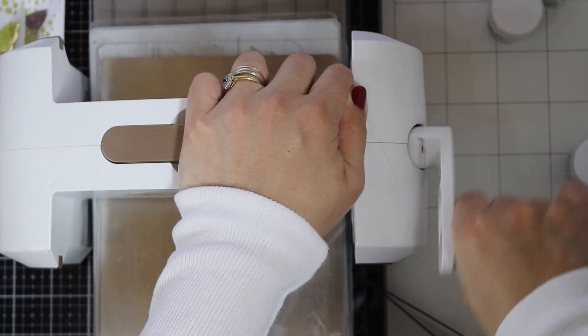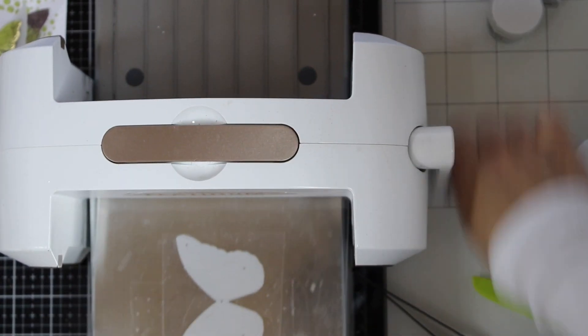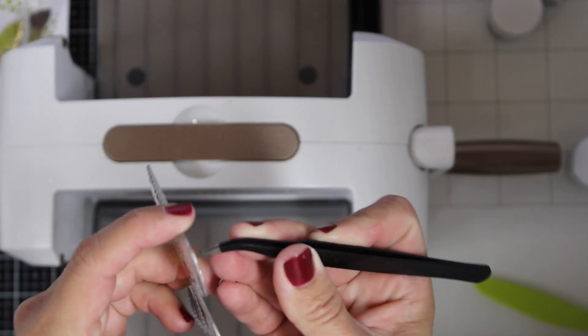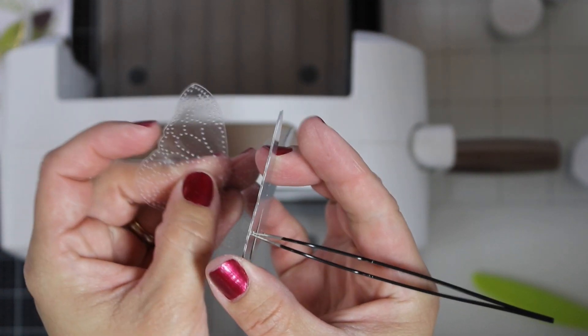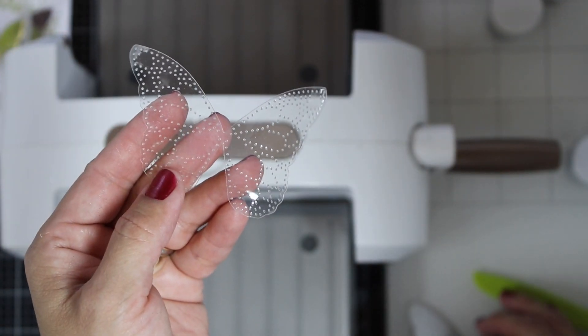I'm using a metal shim to easily die cut this material because the acetate is plastic and thick and it's not as easy to die cut if you don't have a metal shim. Once I have done that, I get this beautiful butterfly out of acetate that I can use...